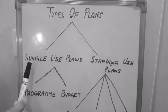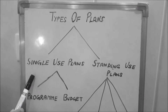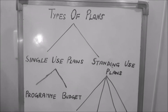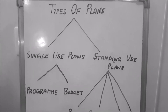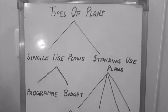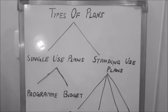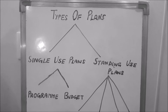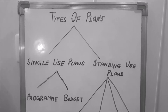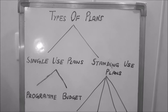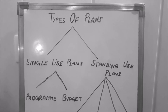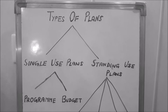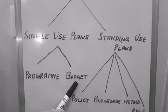Single use plans are such plans which are developed for events and projects which occur only once. These are the plans prepared for utilization for only one time. If we want to use a single use plan again, we have to frame them again. Under single use plans, we can have two plans: program and budget.